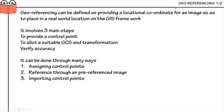This process of georeferencing involves three main steps. First is to provide the control points or the locations. Second is to allocate a suitable geographic coordinate system, which basically defines the 'where' aspect of your map. Third is providing the suitable transformation based on the number of control points. Ideally we should have a minimum of at least four control points — more control points means higher accuracy. Based on the number of control points, you pick the first-order or second-order polynomial transformation.